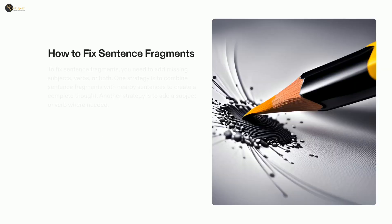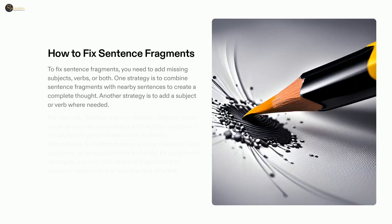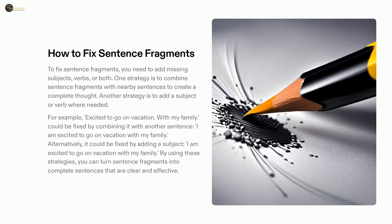Regarding sentence fragments, the key is to combine them with sentences nearby or include a subject or verb, making your sentence understandable and effective. For instance, the sentence fragment 'excited to go on vacation with my family' can be put together with 'I am excited to go on vacation with my family.' Alternatively, it can be fixed by merely adding a subject: 'I am excited to go on vacation with my family.' By utilizing these strategies, you can easily turn sentence fragments into comprehensible and effectual sentences.